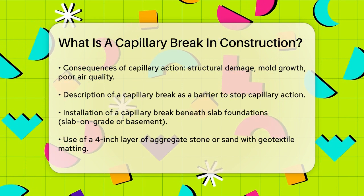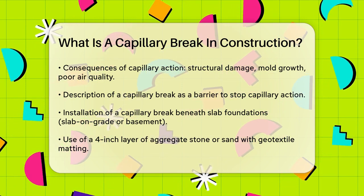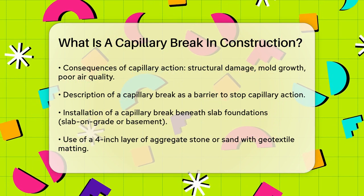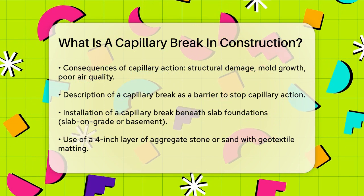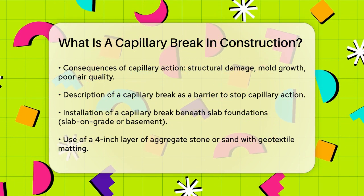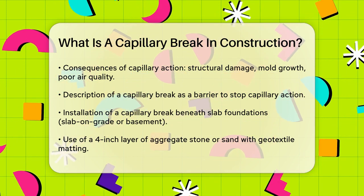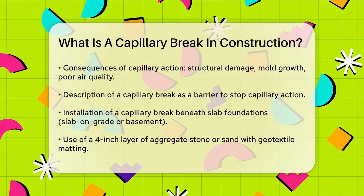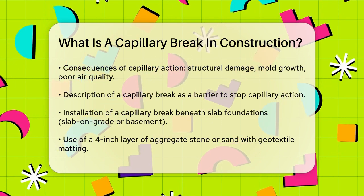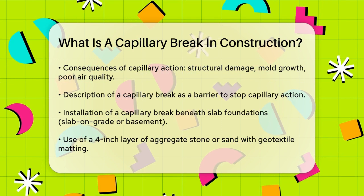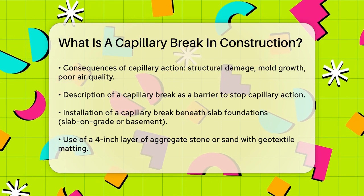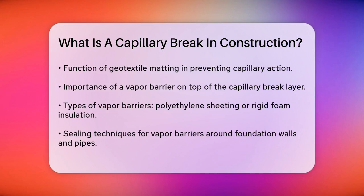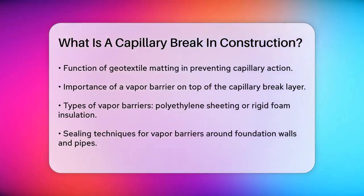Here's how it works. When building a slab foundation, such as a slab-on-grade or basement slab, you need to install a capillary break beneath it. This typically involves a four-inch layer of aggregate stone or sand, covered by geotextile matting. The geotextile matting has air gaps that prevent capillary action from occurring.